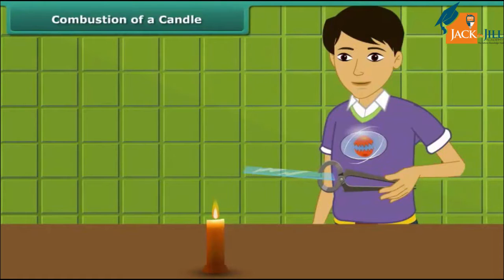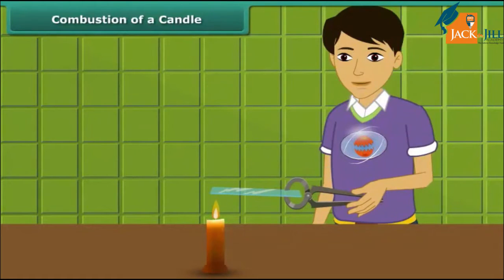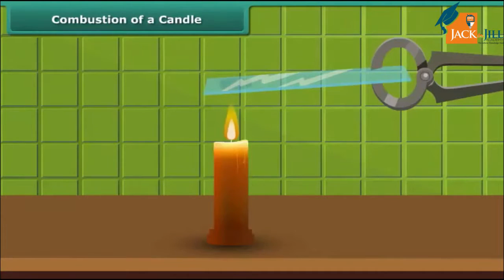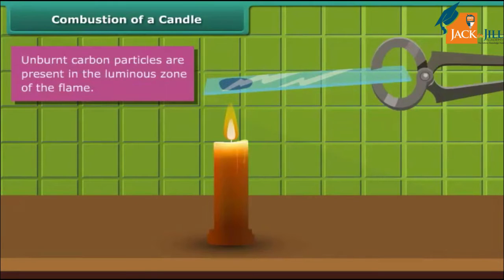Let us watch Rohan performing an activity. He is introducing a glass plate into the luminous zone of the candle flame with the help of a pair of tongs. The glass forms circular blackish spots, indicating the presence of unburnt carbon particles present in the luminous zone of the flame.